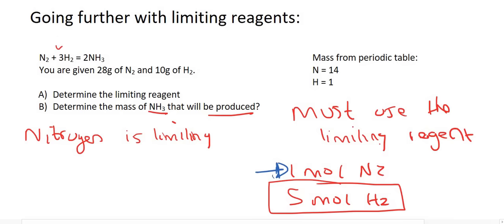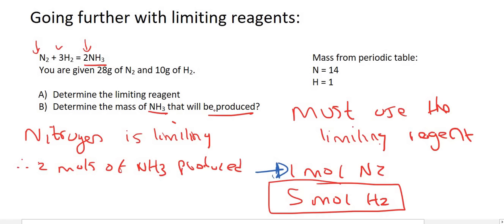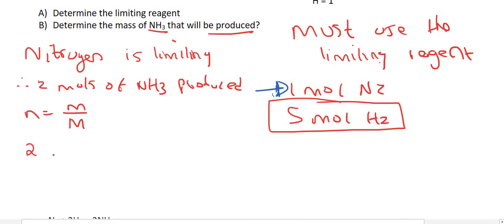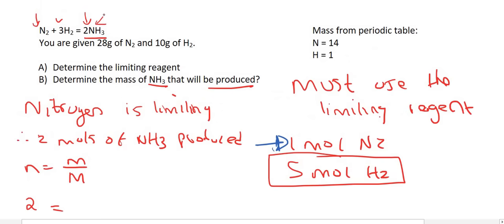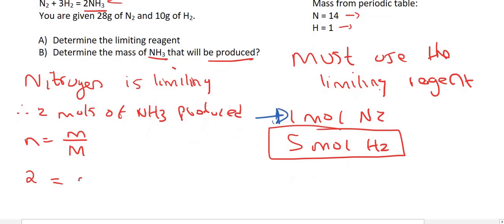Using one mole of nitrogen, from the balanced equation the amount of NH₃ produced is two moles. We then work out the mass using n = m over M, where moles equals 2. The molar mass of NH₃ is one nitrogen plus three hydrogens: 14 + 3 = 17. Working out the mass gives us 34 grams of NH₃.